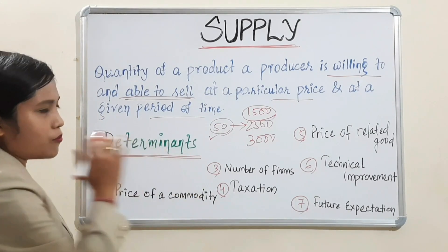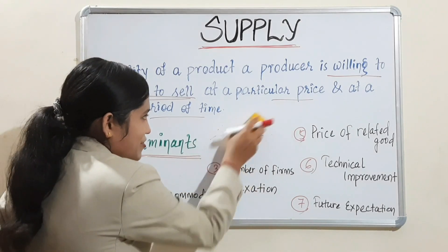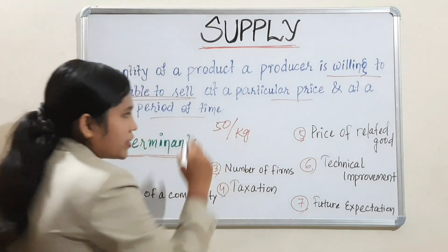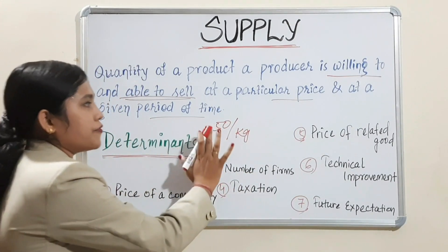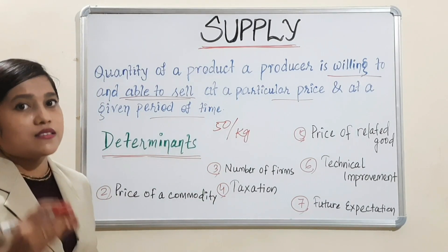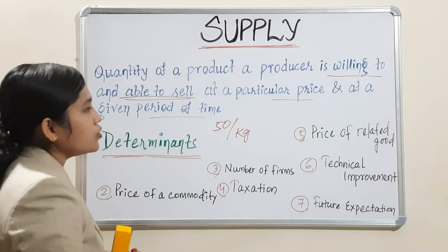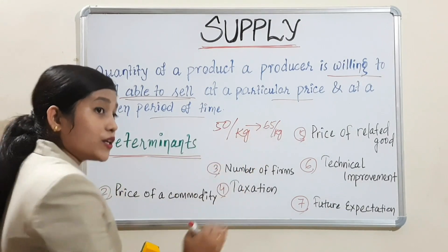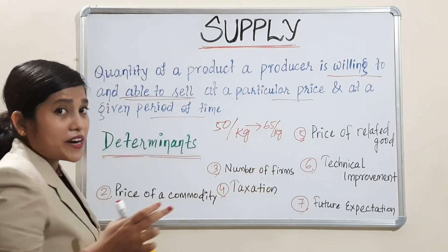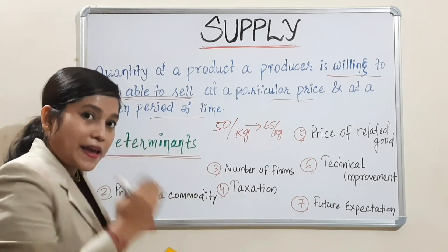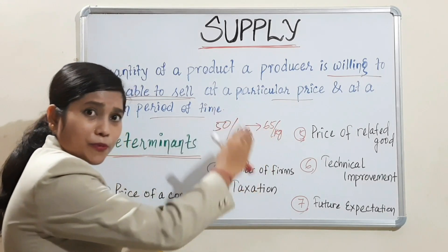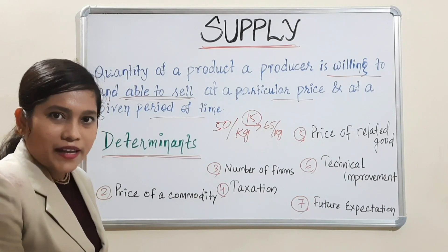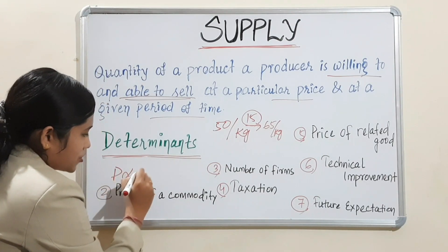Next is price of commodity. Same rice farmer example. Suppose usually I am selling rice at 50 rupees per kg. Now the market price of the same rice has been increased to 65 rupees per kg. Initially I used to sell at 50 rupees per kg, now I can sell at 65 rupees per kg. I will supply more because with the same cost of production I can have more profit — I am getting 15 rupees extra per kg. So I will increase my supply.